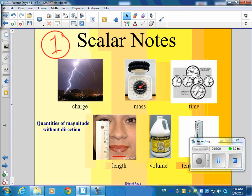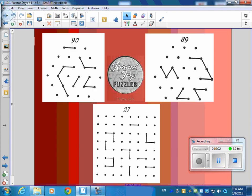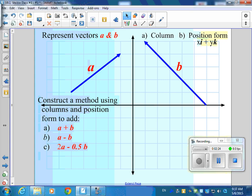So that brings us all the way down to the assignment. Go down to day one. The following situations need to be described using an appropriate measure. Classify them as scalar or vector. So let's do the first one together. A classroom chair is moved from the front of the room to the back of the room.